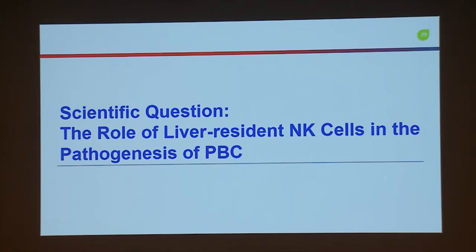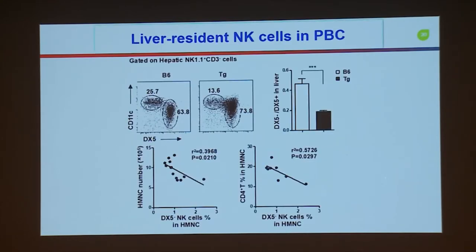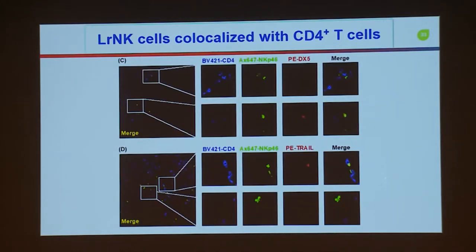Regarding the role of liver resident NK cells in our animal model, very clearly in our animal model there are about 13-16% liver resident NK cells. There is a very clear negative correlation of liver resident NK cells with liver lymphocytes. Especially, they have a very high negative correlation with CD4 T cells — there is no correlation shown with CD8 T cells. Most importantly, to confirm the localization data, we found liver resident NK cells co-localize with CD4 T cells, but not circulating NK cells.